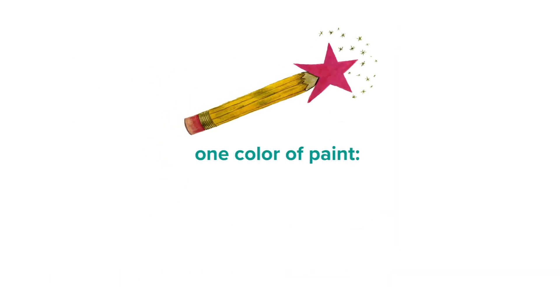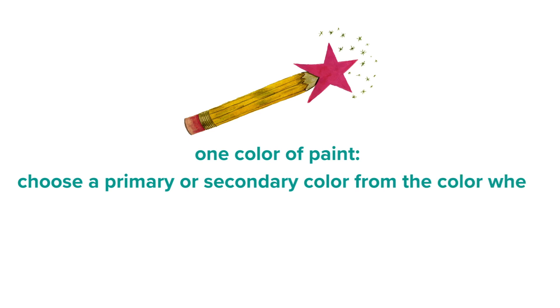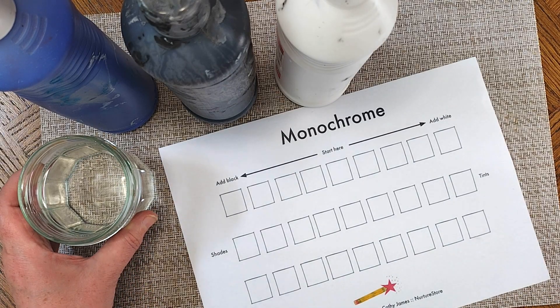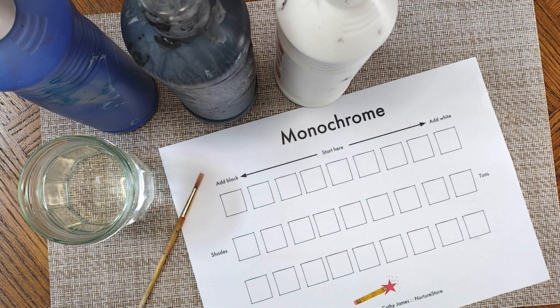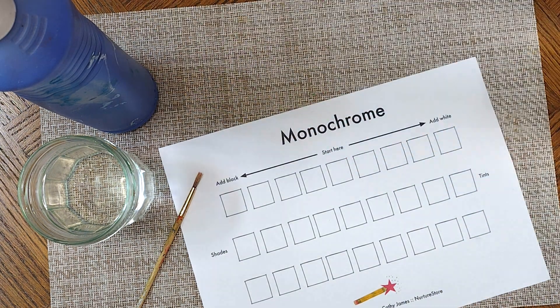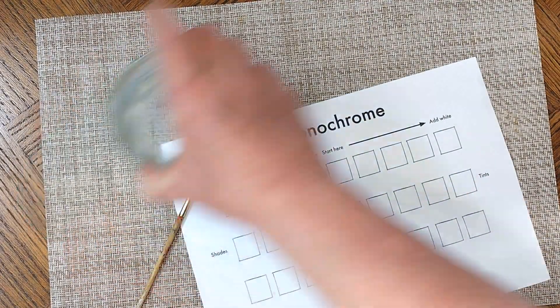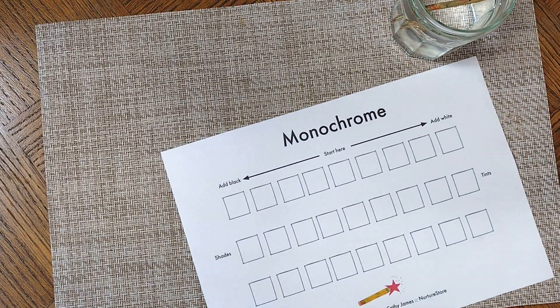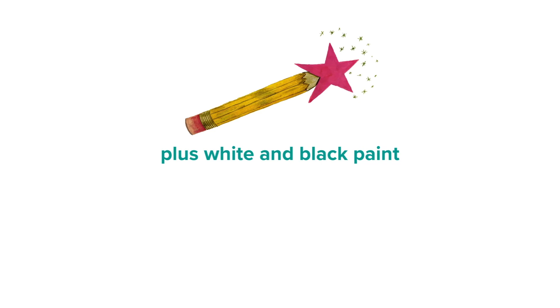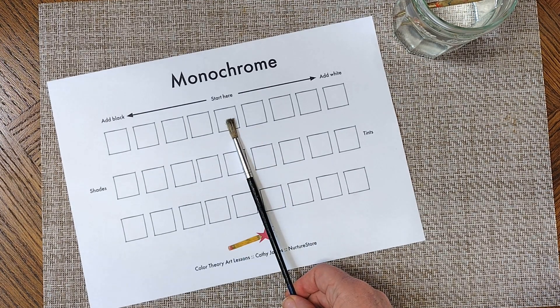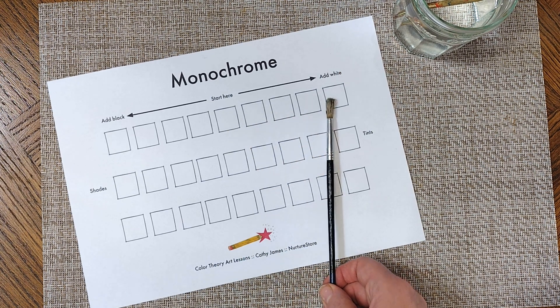Today we're working with paint and you can choose which colour you want to work with. It could be a primary colour — red, blue, or yellow — or a secondary colour — purple, green, or orange. We're going to use this colour to mix our colour palette and then use it later in our artwork. I'm going to use blue because I'm going to be doing an ocean picture. You can also choose a different colour if you have an idea for a different painting. Remember, you're the artist in charge of your painting so you get to choose. We're also going to need white and black paint to turn our pure colour into a range of tints and shades.